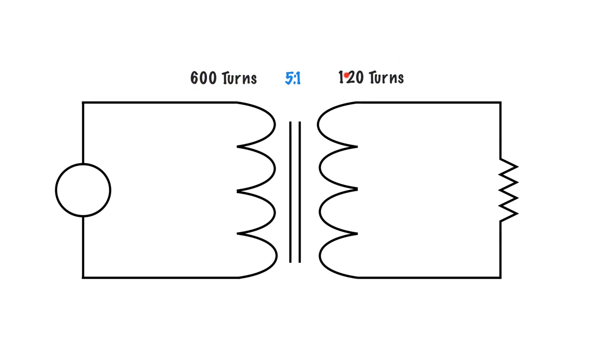So again, just 600 divided by 120 gets me a turns ratio of 5 to 1. So now let's give ourselves a primary voltage and see what happens to our secondary voltage.